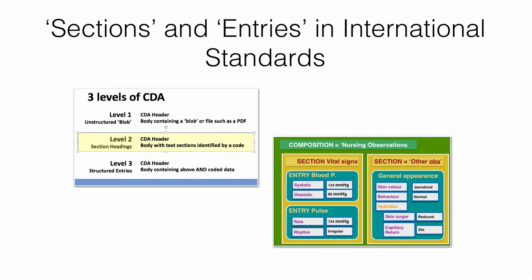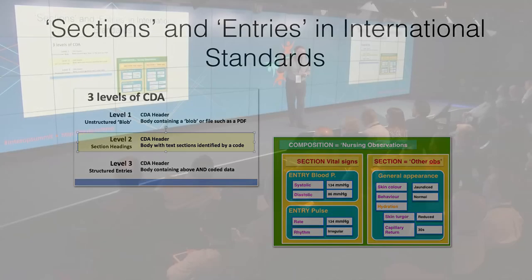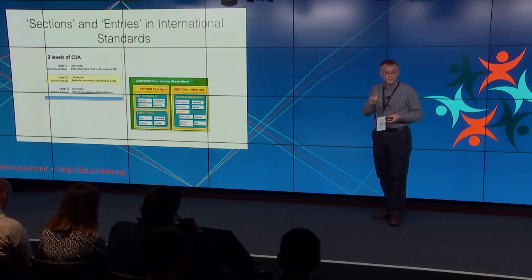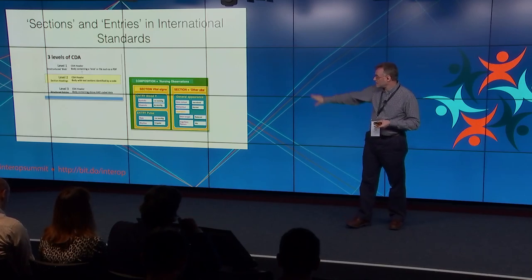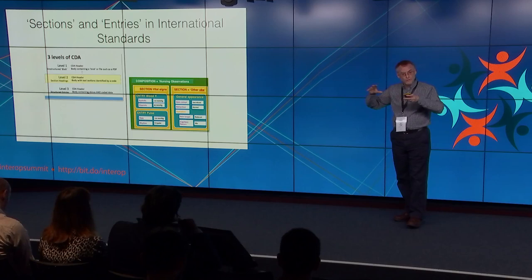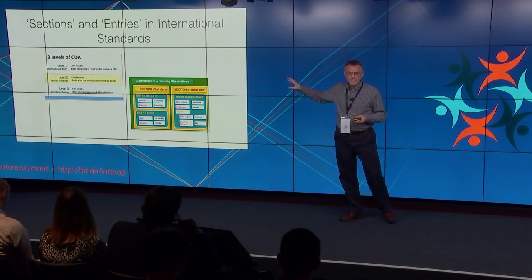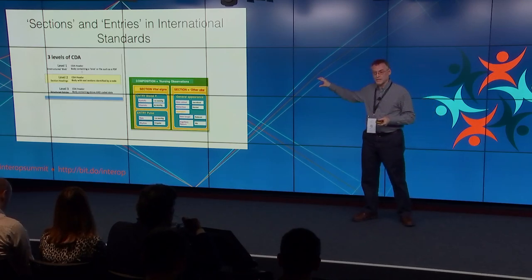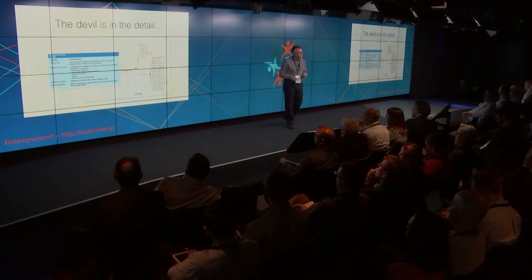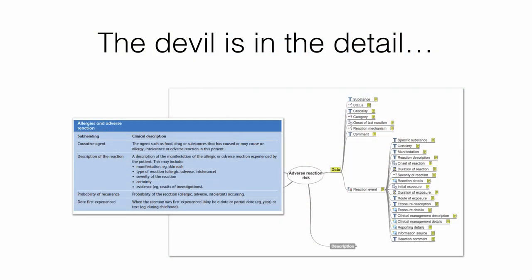Sections and headings are well understood in international standards. CDA, FHIR, and other versions of HL7 all have the idea of sections or headings, but they also have something underneath — a clinical statement or entry — which is a much more precise definition. The same is true in the openEHR world: we have the same idea of headings to break up documents, but the really detailed, semantically precise, interoperable definitions are a layer below that. Sections and headings are about organization — don't invest the meaning in sections, because people want to reorganize their records in different ways.